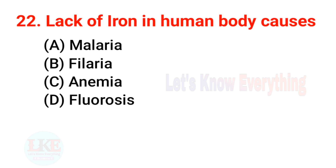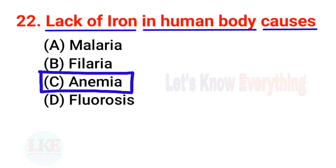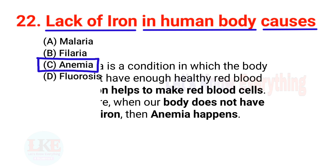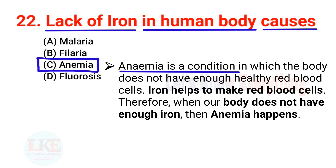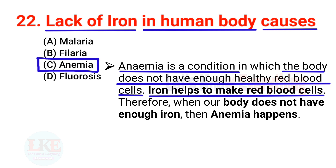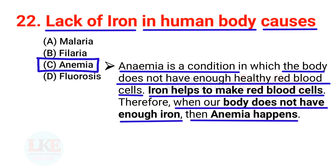Question number 22: lack of iron in the human body causes anemia. Anemia is a condition in which the body does not have enough healthy red blood cells. Iron helps to make red blood cells, so when the body does not have enough iron, anemia happens.